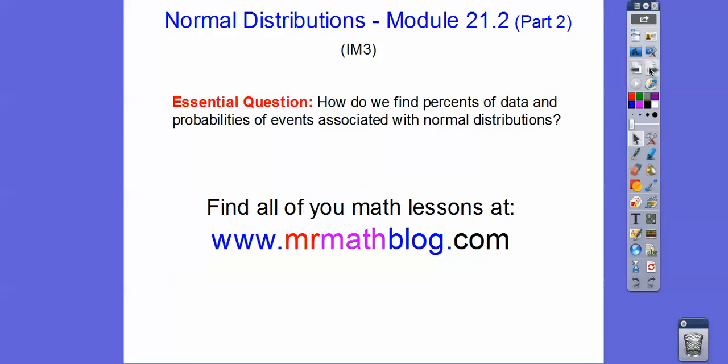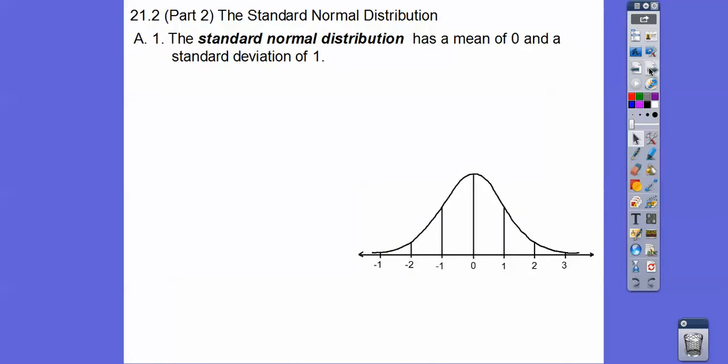So our question here is how can we find the percents or the probabilities or the fractions of events associated with normal distributions? So our standard normal distribution has a mean of zero and a standard deviation of one. Now, things in real life don't have a mean of zero or a standard deviation of one, but it still follows that within one standard deviation of the mean, about 68% of the data lies within there.